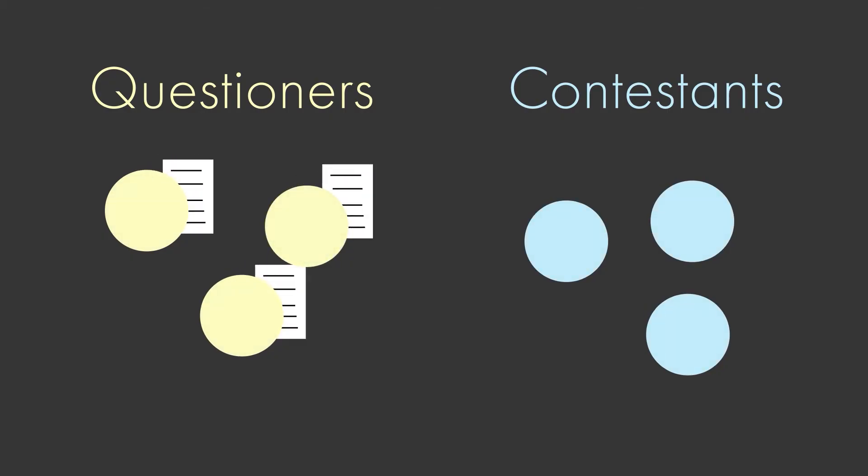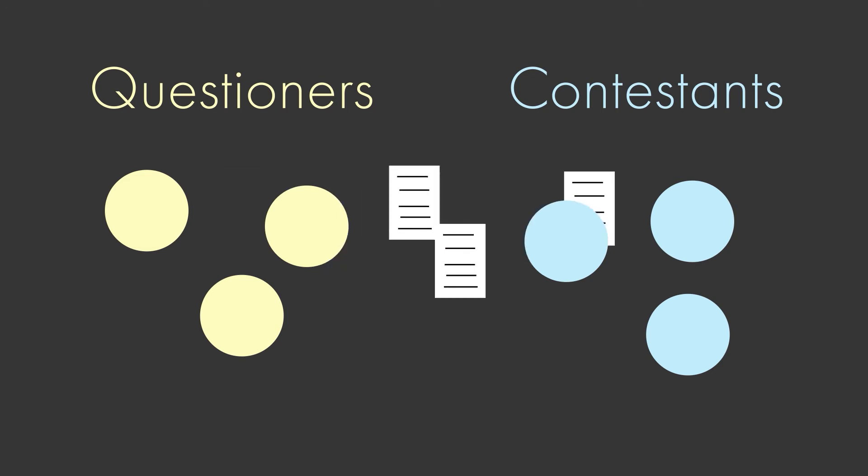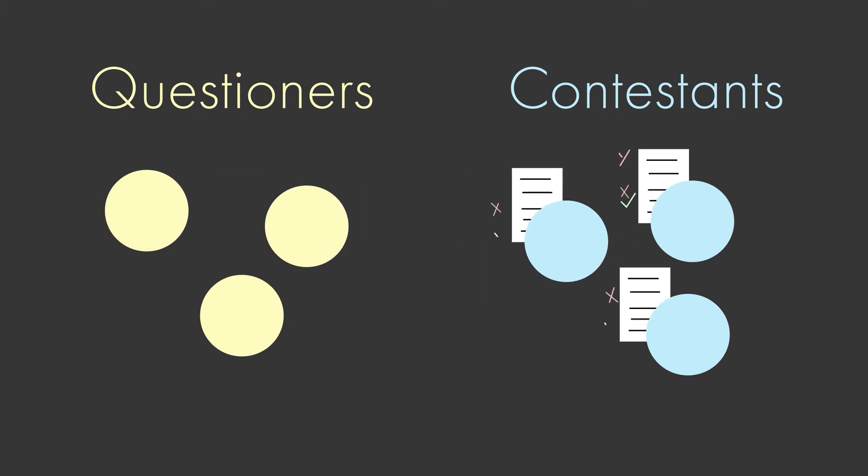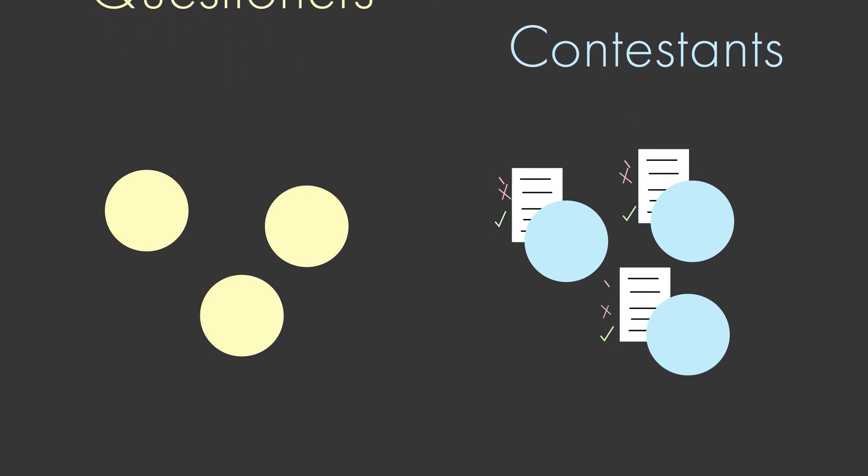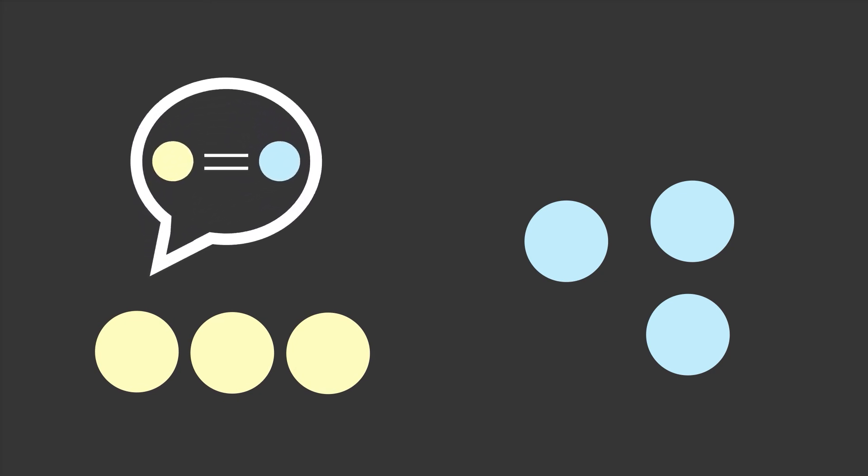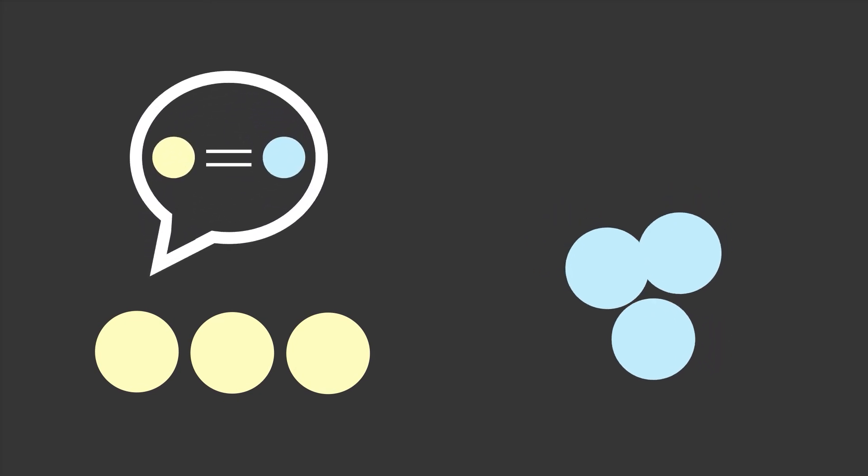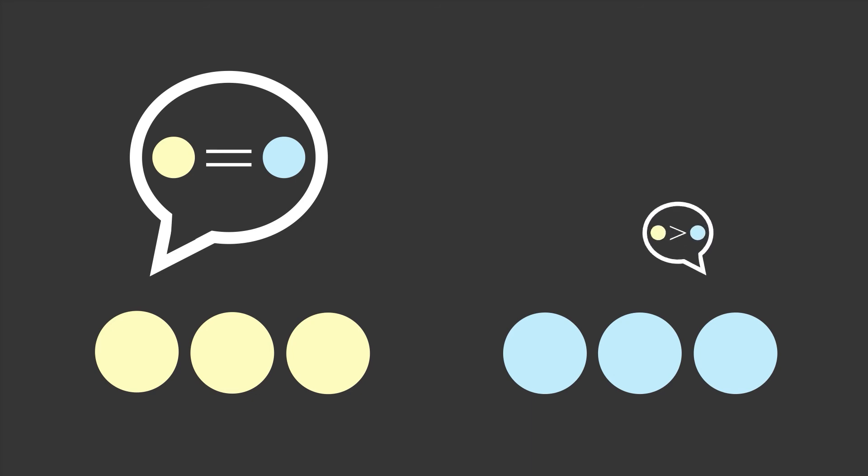Questioners developed difficult questions that they knew the answers to, and they presented these questions to the contestants. Both the questioners and the contestants were asked to rate their general knowledge compared to the average student. Questioners didn't rate their general knowledge any higher than the contestants, but the contestants rated the questioner's knowledge higher than their own.